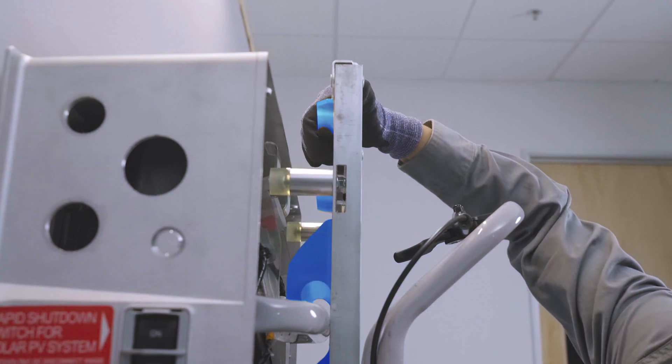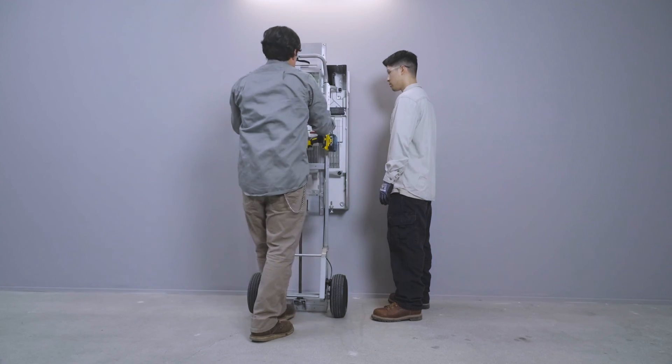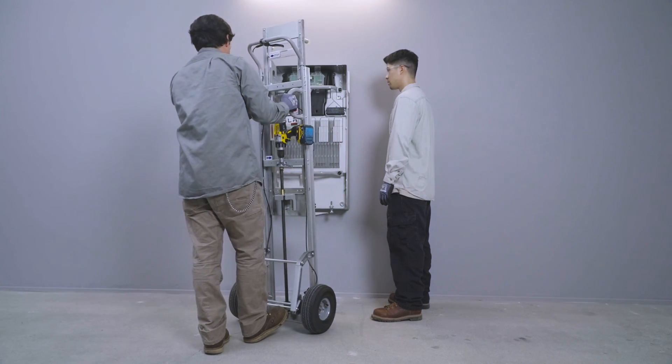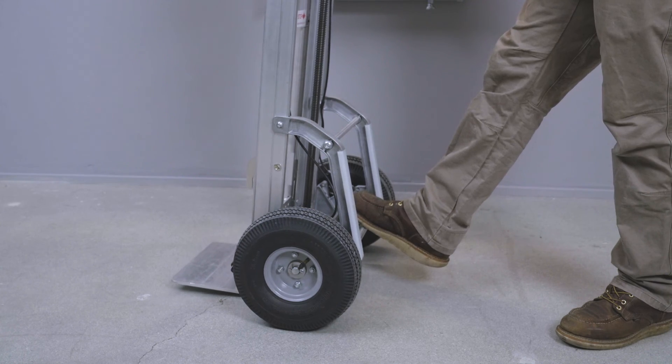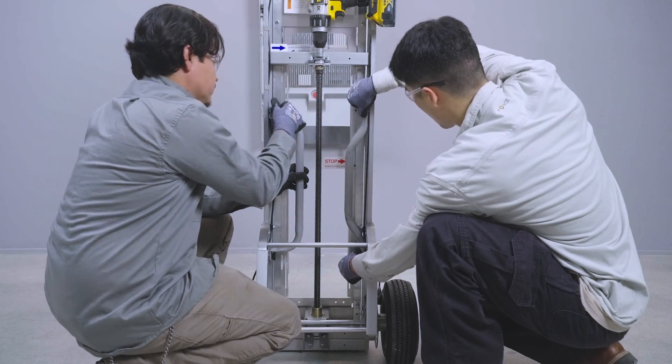Pull up on the locking plate to disengage the Dolly from Powerwall 3. Lift the Dolly and pull it away from Powerwall. Lower the lifting platform down to the ground. Remove both handles from Powerwall 3 and reattach them to the Dolly.